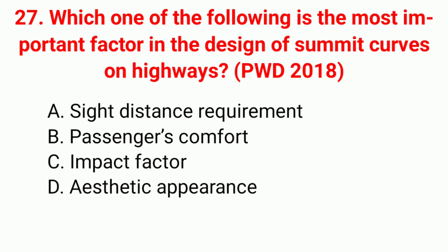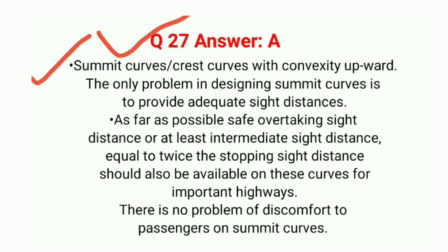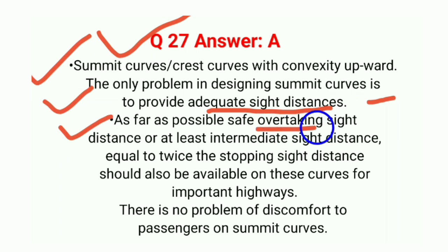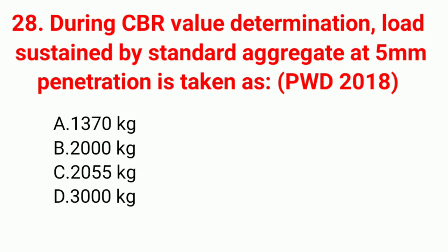Question 27: Which is the most important factor in the design of summit curve on highways? Correct answer A: sight distance requirement. The only problem in designing a summit curve is to provide adequate sight distance as far as possible for safe overtaking. The sight distance, or at least intermediate sight distance equal to twice the stopping sight distance, should be available on this curve for important highways.